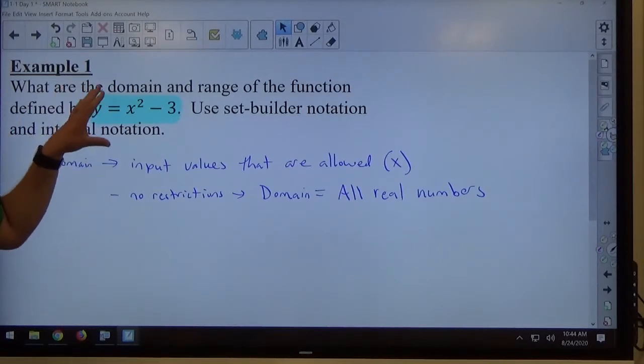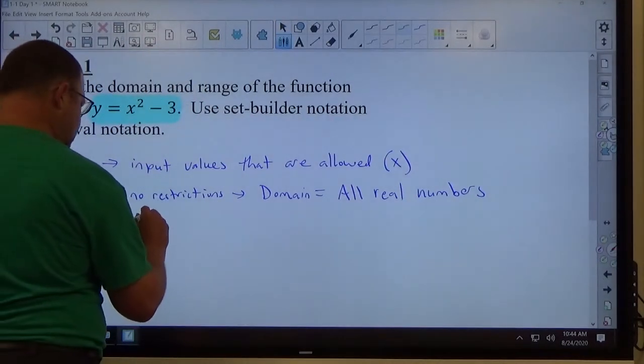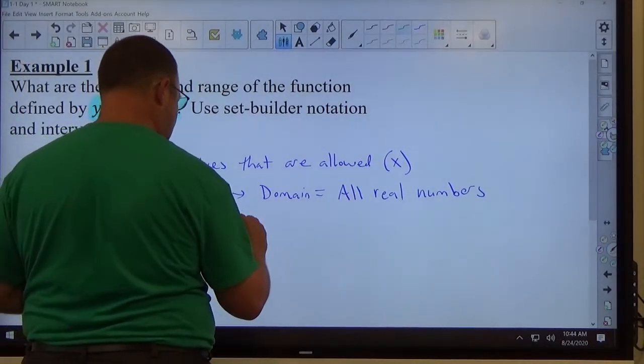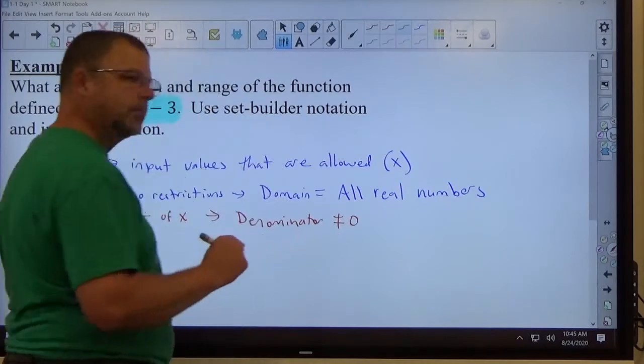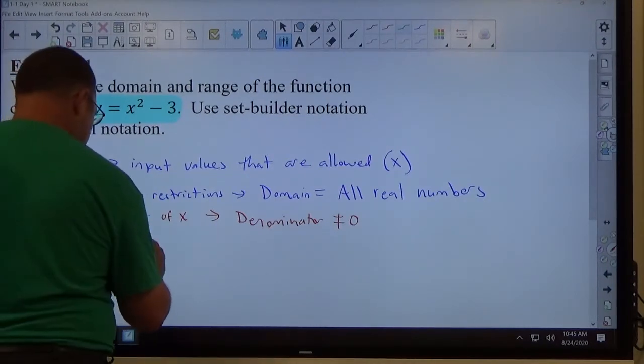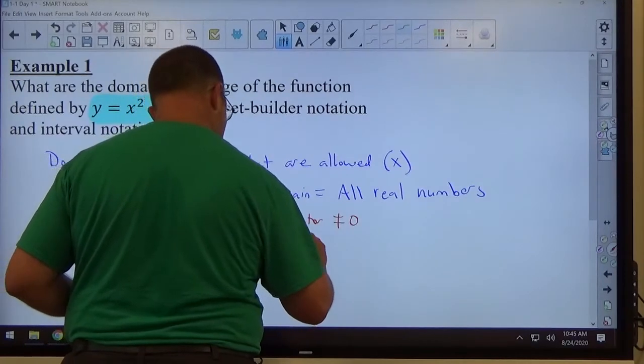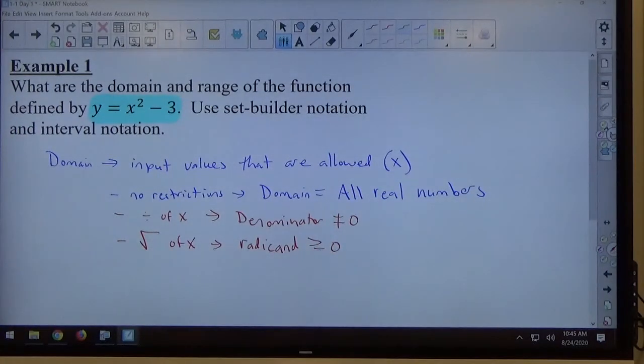When you're doing input values, that's all you care about is the structure of the thing. The other thing that might happen, division of x. To find domain, we're going to have to say denominator is not equal to zero. So to get a domain when there's division happening, the denominator is not allowed to equal to zero.